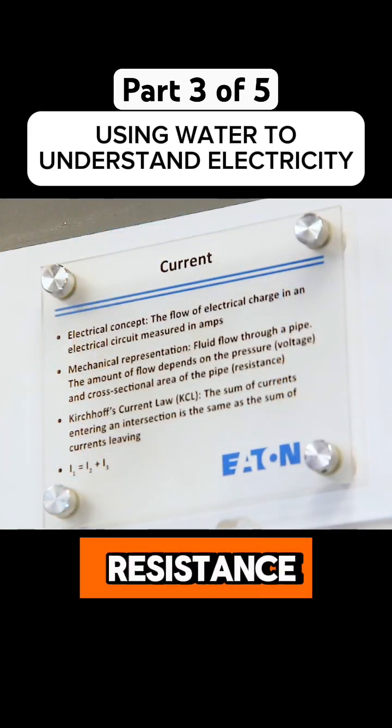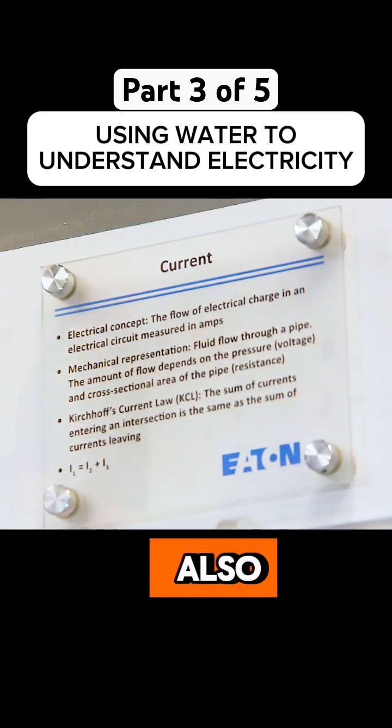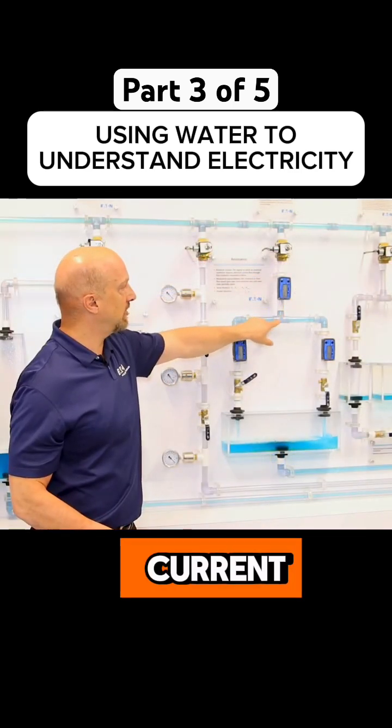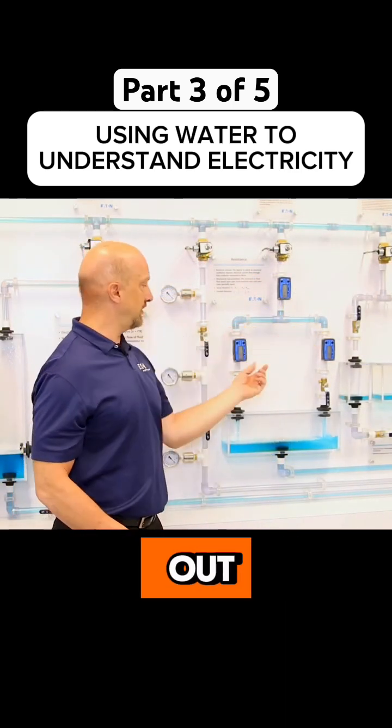So current divides according to the path of least resistance, but it also is summed in a node. So the total current going in equals the current going out, similar to flow.